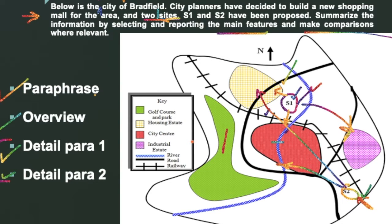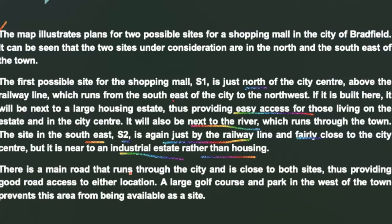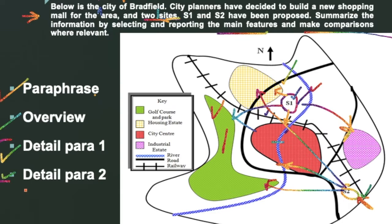We used prepositions of place and direction throughout. However, in our discussion we didn't mention the golf course — and we must include every detail shown in the map, or we will be penalized. We can say: 'A large golf course and park in the west of the town prevents this area from being available as a site.' Remember, there is no conclusion in writing task 1 — simply paraphrase, provide an overview, and give two detailed paragraphs with different information.